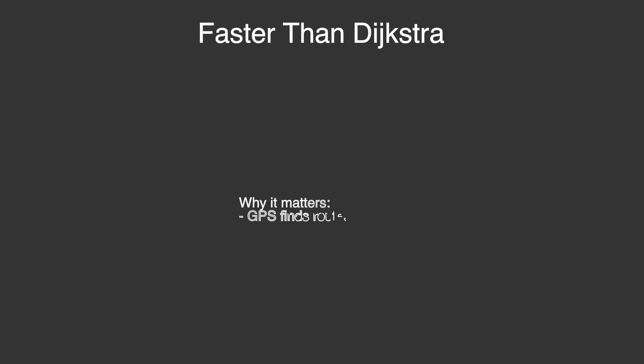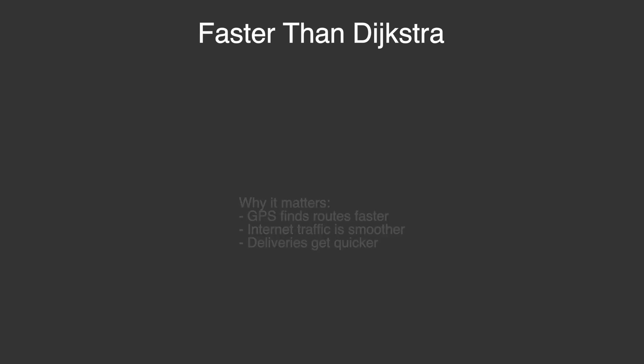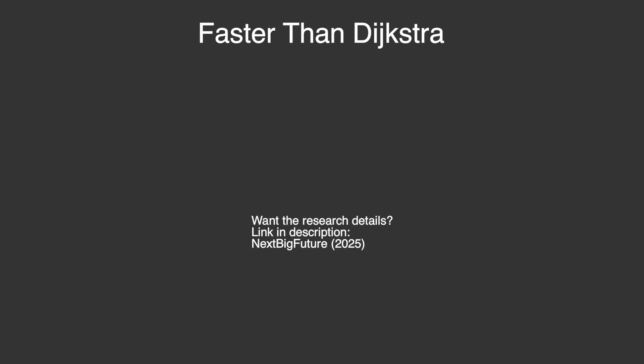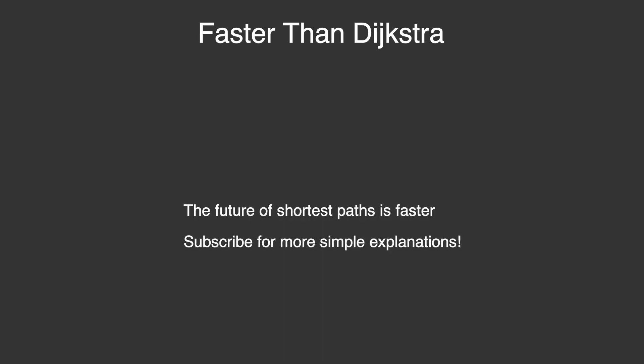And why does this matter? Because faster shortest paths mean GPS navigation updates routes instantly, the internet can find faster paths for your data, and deliveries get planned more efficiently. If you'd like to dive deeper into the research, I've linked the full article in the description. The future of shortest path algorithms is faster, smarter, and closer than you think. Subscribe if you'd like more simple explanations of complex topics, explained just like this.